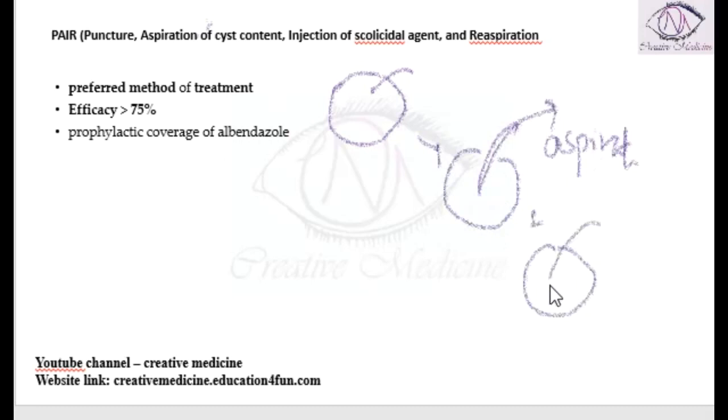Then after that you will inject the scolicidal agent into it. This scolicidal agent will try to kill all the daughter cysts which are left. Once you aspirate, all the hydatid fluid along with the daughter cysts are aspirated.